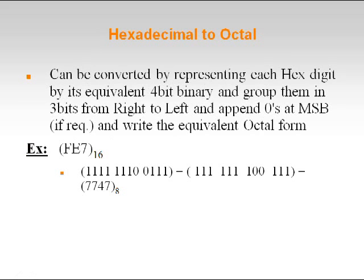Now let us see hexadecimal to octal. It can be converted by representing each hex digit by its equivalent 4-bit binary as we did now, and grouping them in three bits from right to left. Append zeros at the MSB if required, and write the equivalent octal form. So initially we represent the hexadecimal number in binary form and then group three bits from right to left, appending zeros at the left if required.